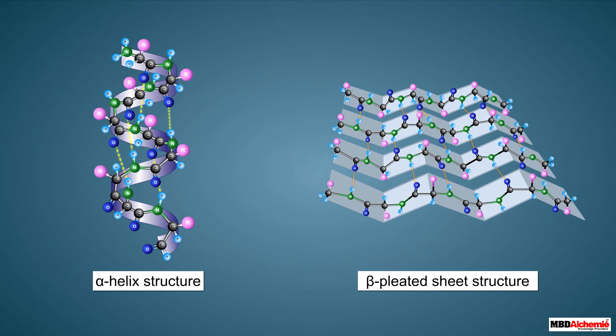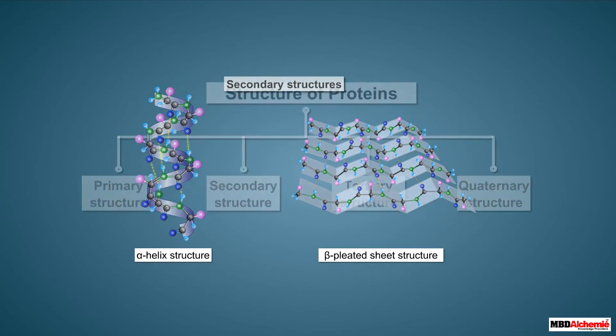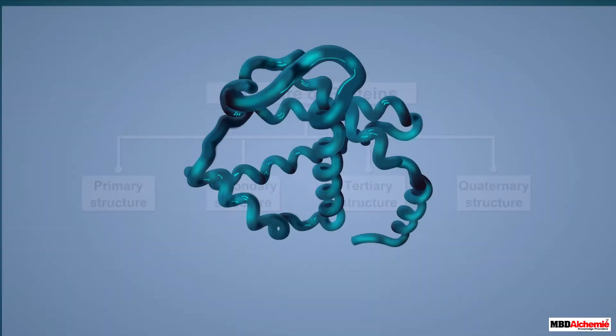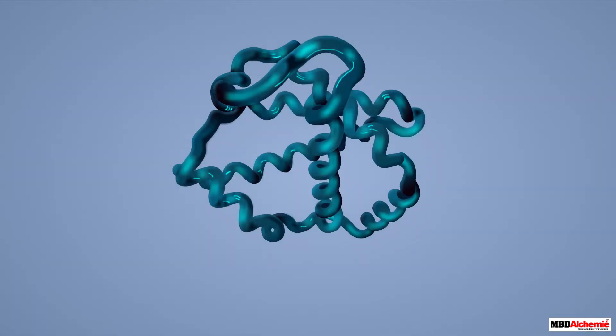So the alpha helix structure and the beta pleated sheet structure represent two different types of secondary structures of proteins.